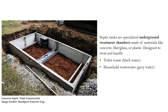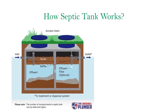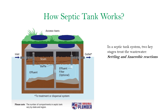In a typical septic tank system, two key stages of treating the wastewater are settling and anaerobic reactions. The process results in a harmless liquid effluent that can either soak into the ground or be further treated. In the given general layout of a septic tank system, you can see that the wastewater from the household enters through the inlet and comes out of the outlet pipe.